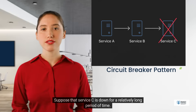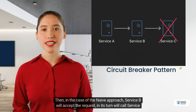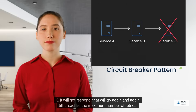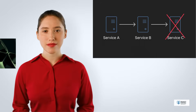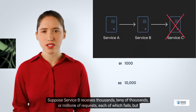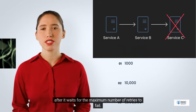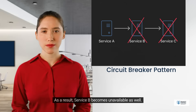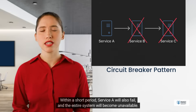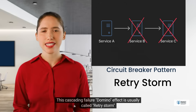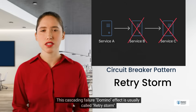Suppose service C is down for a relatively long period of time. With the naive approach, service B will accept the request, call service C, get no response, and retry again and again until it reaches the maximum number of retries. If service B receives thousands, tens of thousands, or millions of requests — each of which fails after waiting through all retry attempts — service B becomes overloaded and then unavailable. Within a short period, service A will also fail, and the entire system becomes unavailable. This cascading failure domino effect is usually called a retry storm.